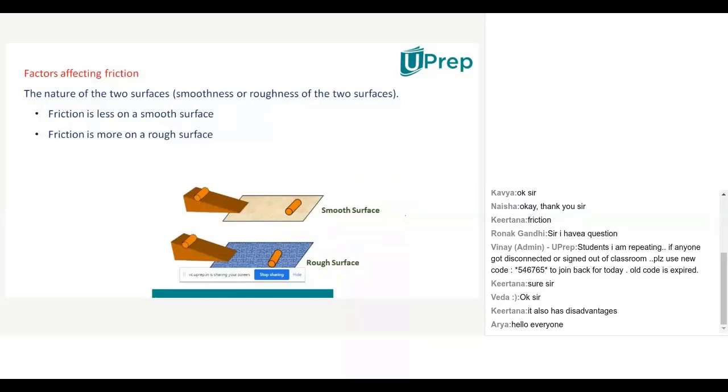So, the first factor affecting the friction is which one, Nana? Nature of the surface. Nature of the surface means either it may be smooth surface or maybe rough surface. Okay.